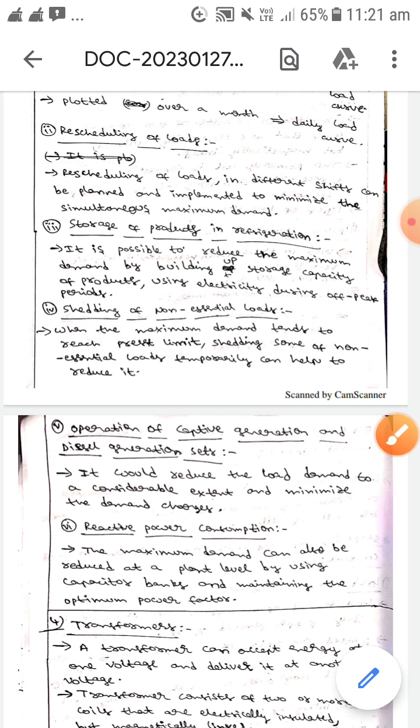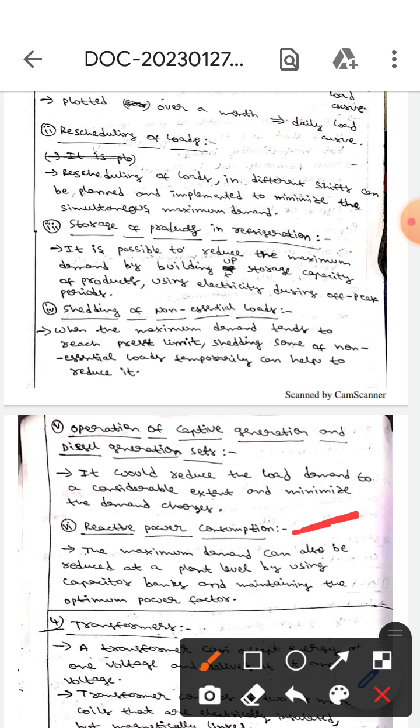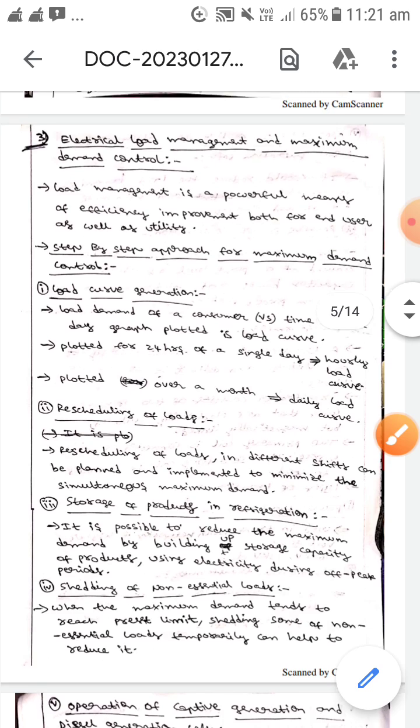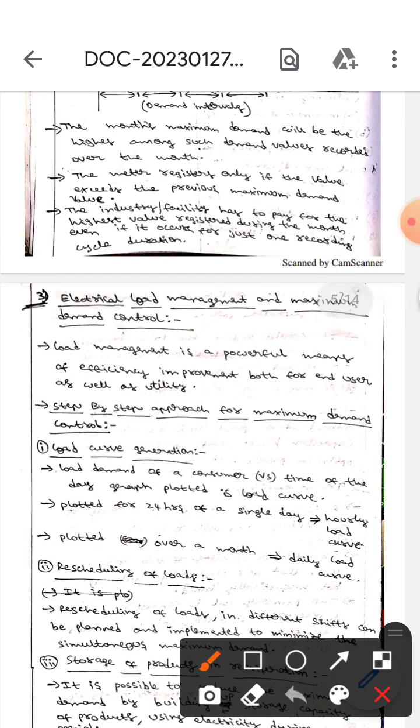The next one is reactive power consumption. The maximum demand can also be reduced at a plant level by using capacitor banks and maintaining the optimum power factor.